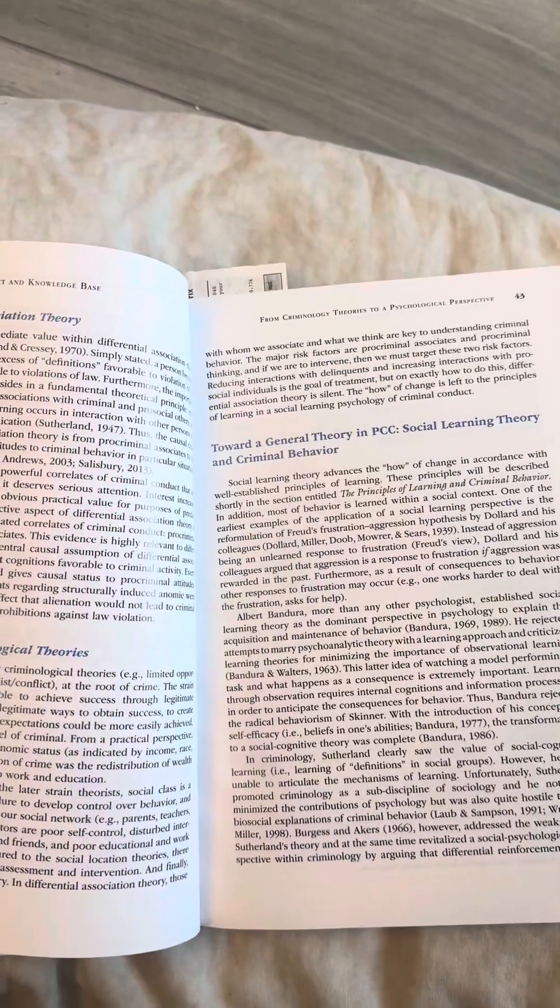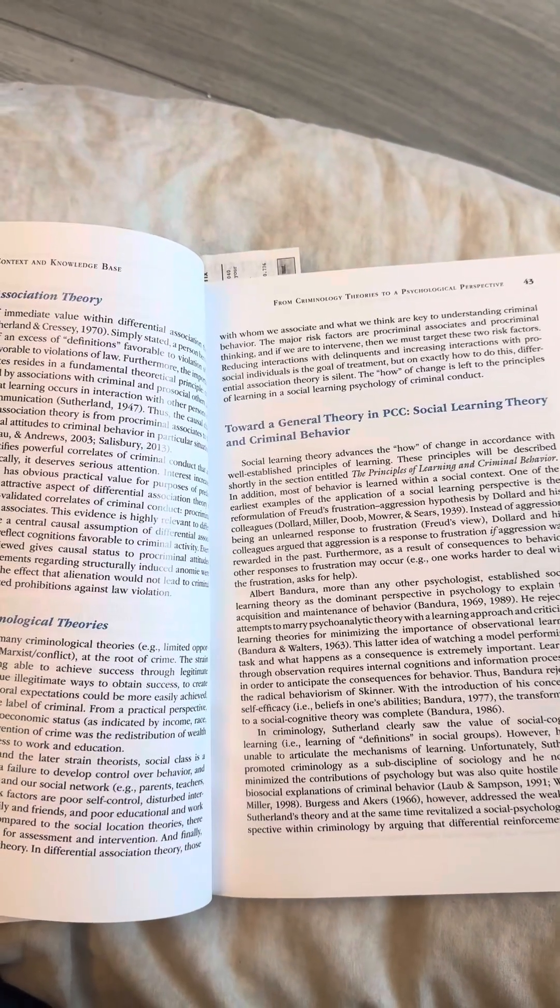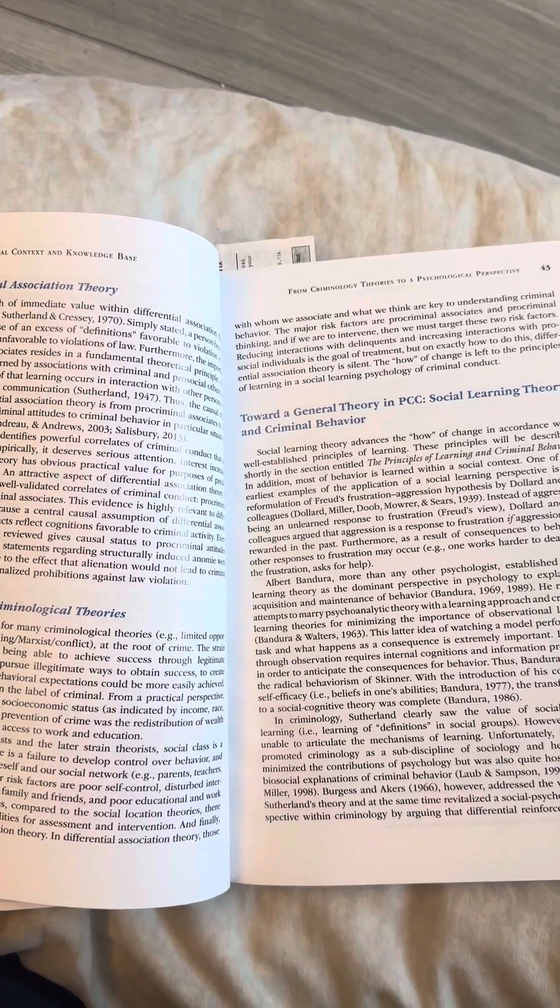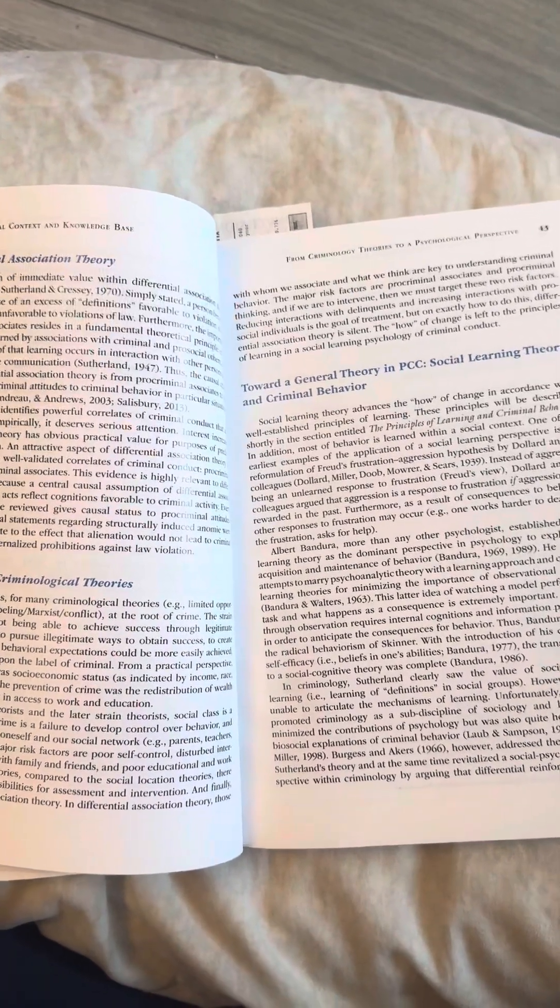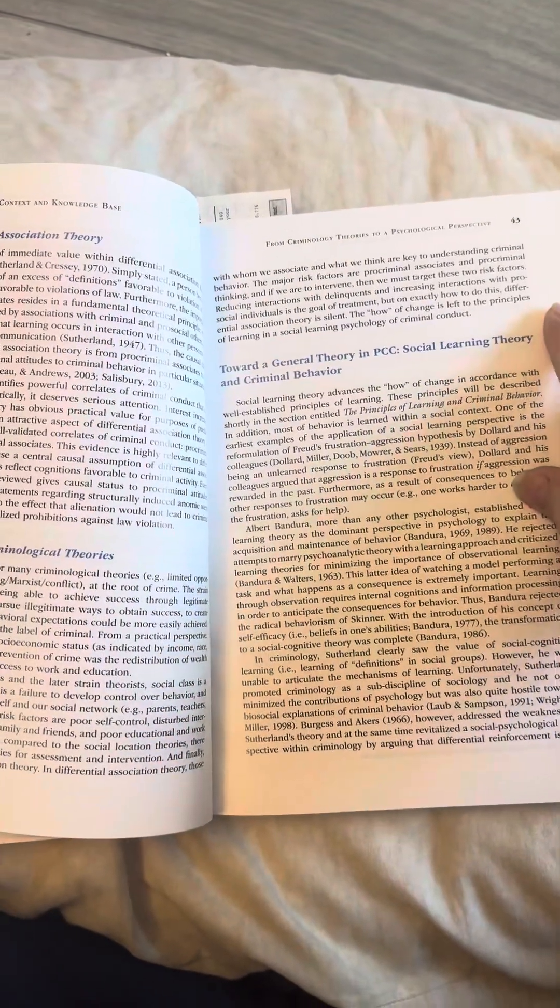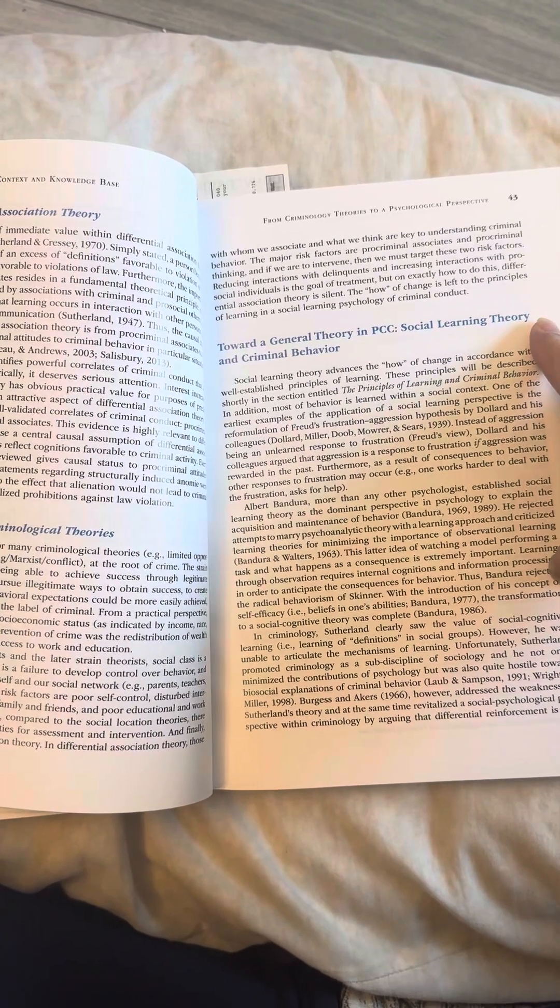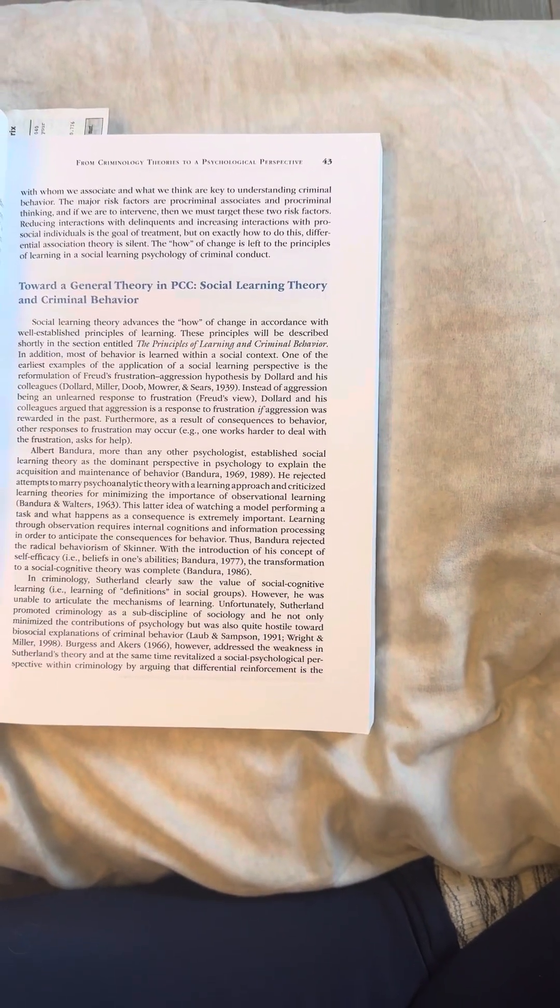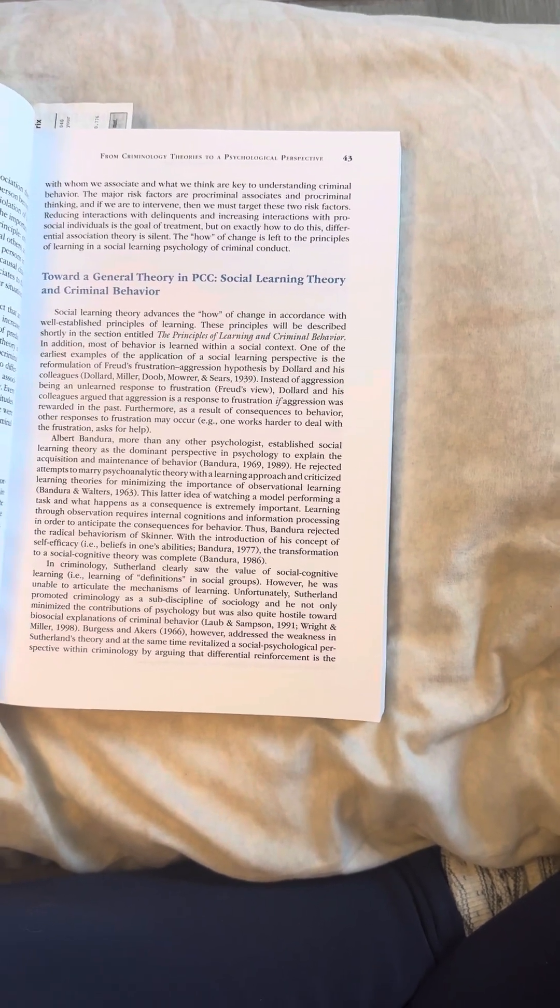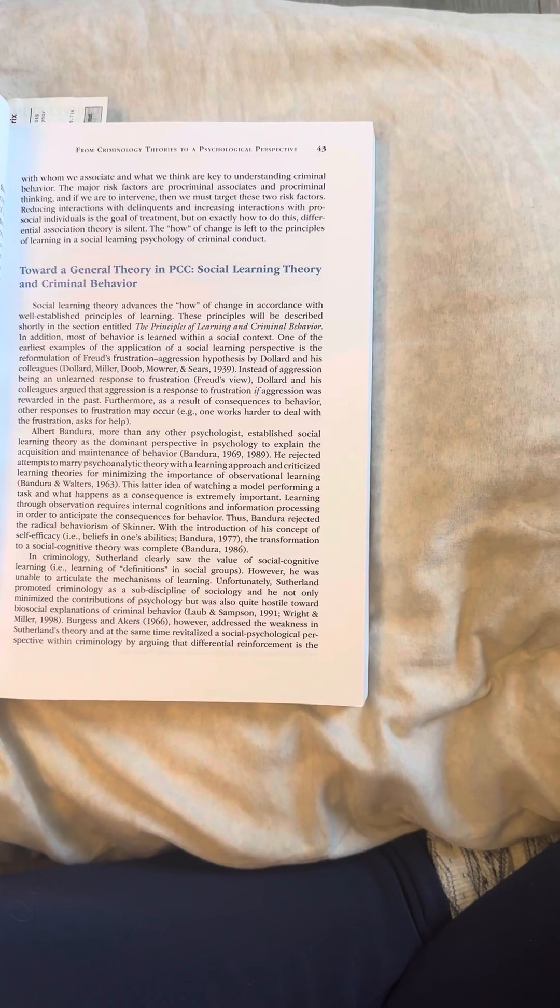And if we are to intervene, then we must target these two risk factors. Reducing interaction with delinquents and increasing interactions with pro-social individuals is the goal of treatment. But on exactly how to do this, differential association theory is silent. The how of change is left to the principles of learning in a social learning psychology of criminal conduct. Toward a general theory in PCC, social learning theory in criminal behavior. Social learning theory advances the how of change in accordance with well-established principles of learning. These principles will be described shortly in the section entitled The Principles of Learning and Criminal Behavior.